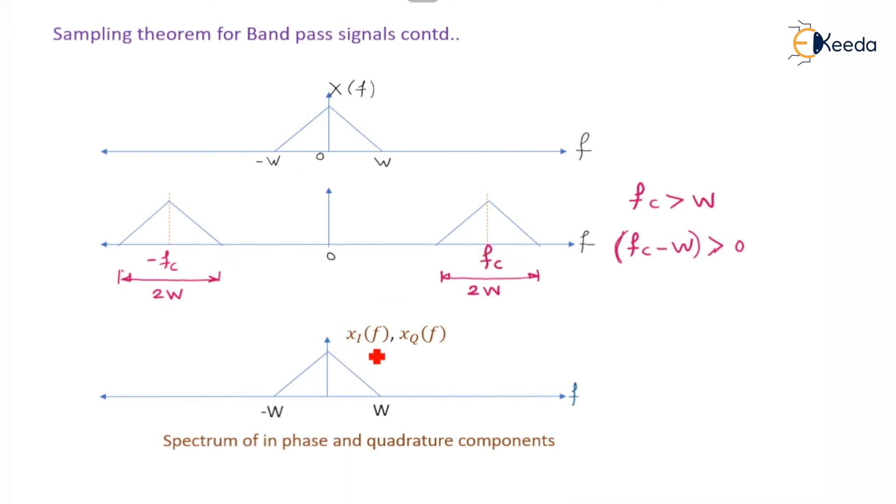If we see the combined output X(f), Xi(f) and Xq(f), we find that it is spread from minus W to W. This is the spectrum of in-phase and quadrature components.